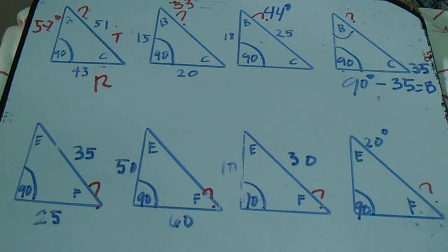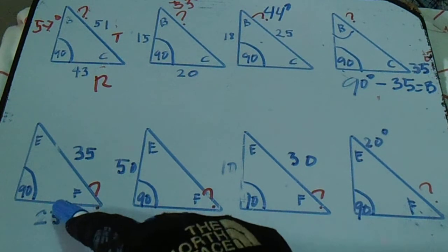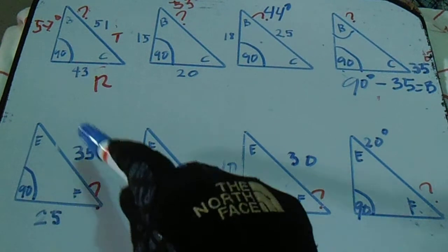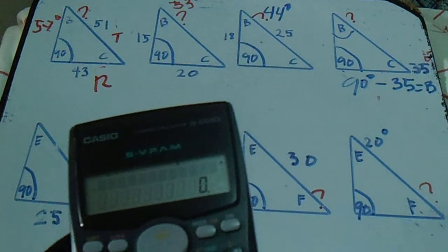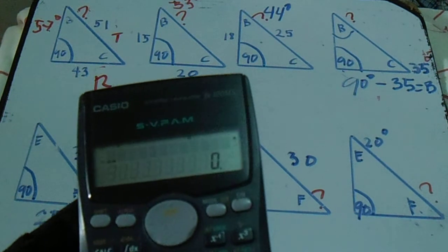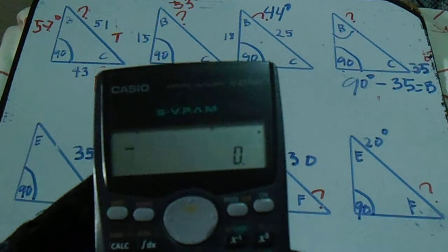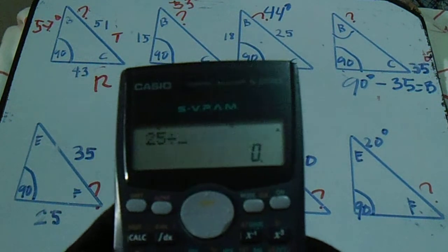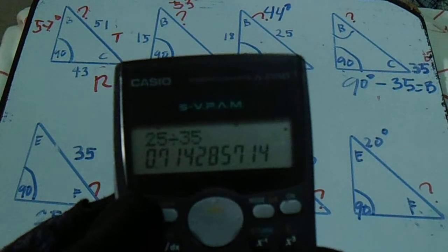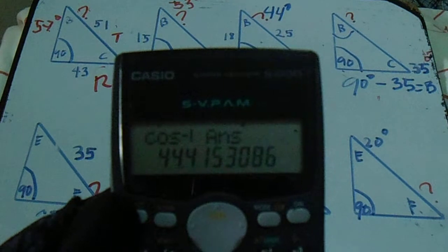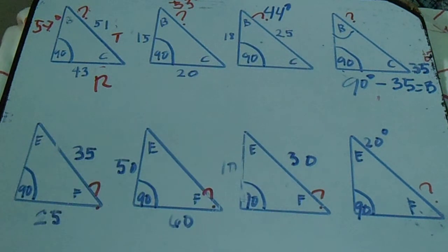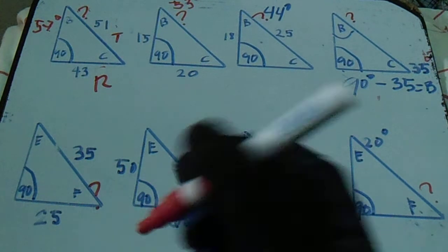Next, finding letter F — our question mark — using the same procedure as the top triangle. Our given here is set 25 and run 35. Run divided by travel: 25 divided by 35, press shift and cosine. Our degrees for letter F is 44 degrees.